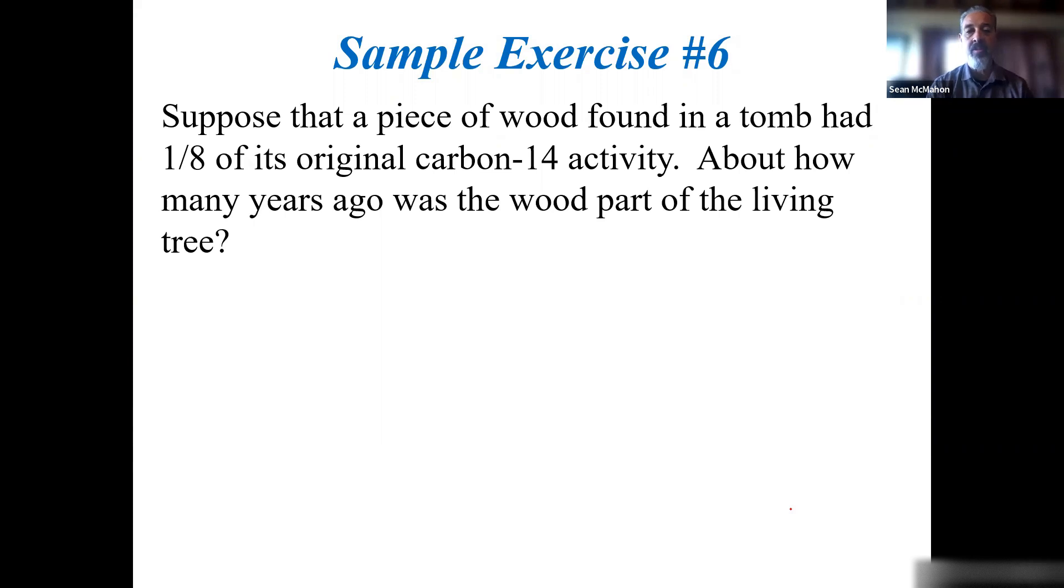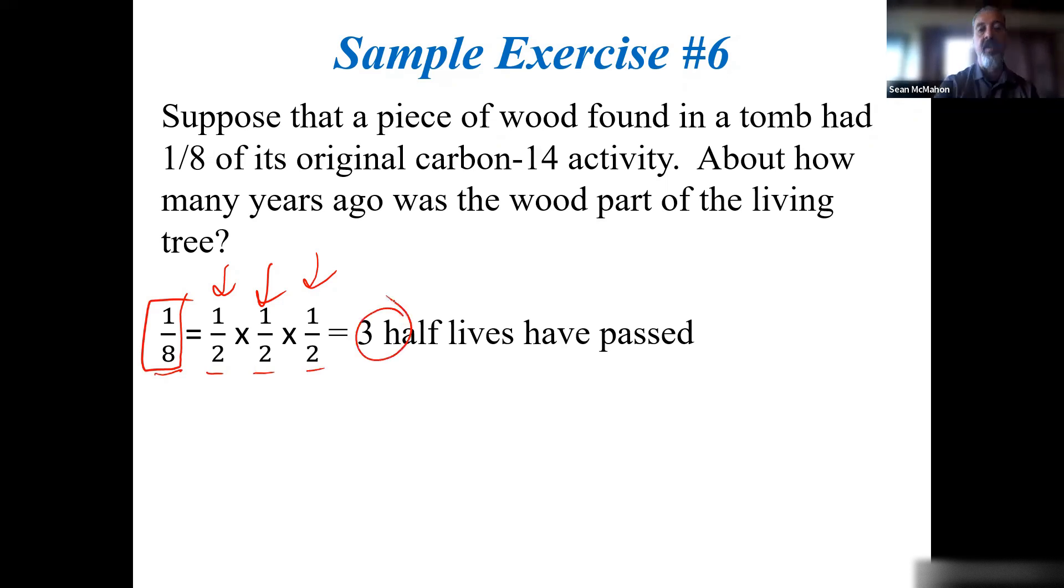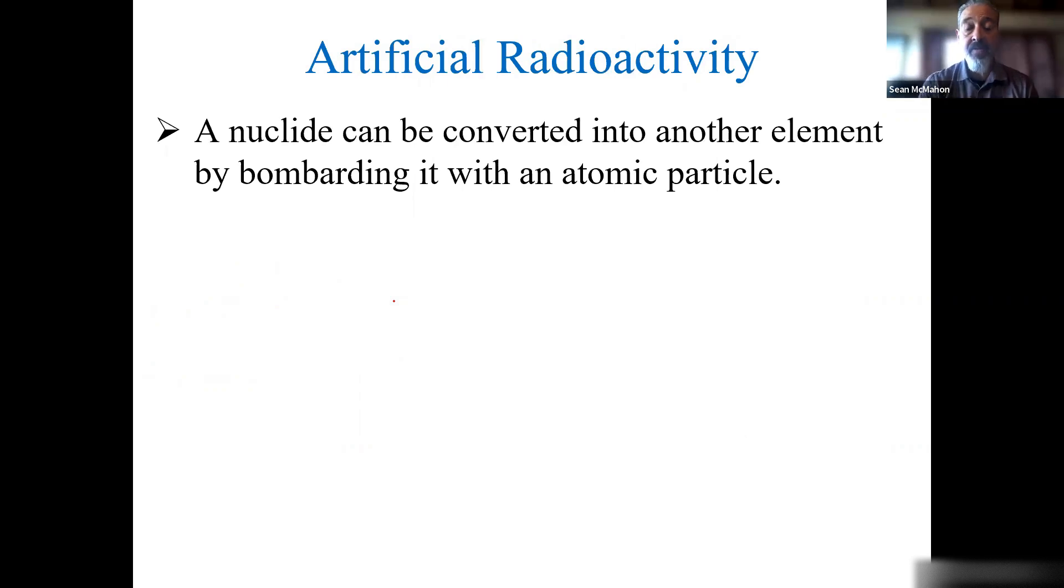Suppose that a piece of wood found in a tomb had one-eighth of its original carbon-14 activity. How many years was the wood part of a living tree? One-eighth—how many half-lives is that? You could go one-half times one-half would be one-fourth, times another half is one-eighth. You could keep hitting one-half on your calculator. One-eighth would require one, two, three half-lives. Three half-lives have passed. How old is something if it had one-eighth of its original carbon-14 activity? Three times the half-life, 5,730 years, would be 17,190 years old.